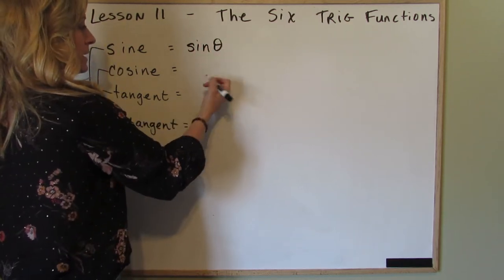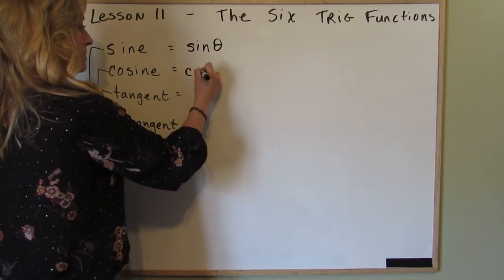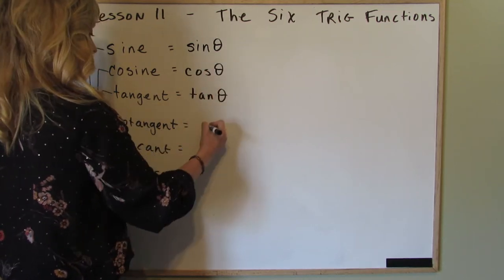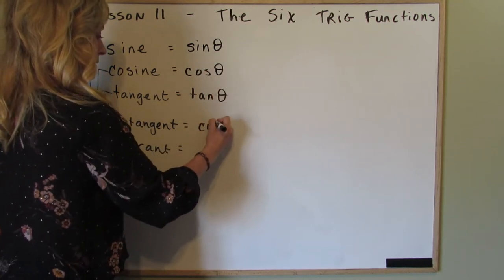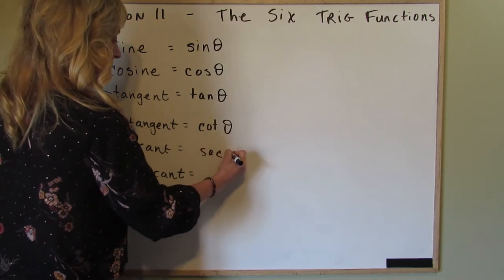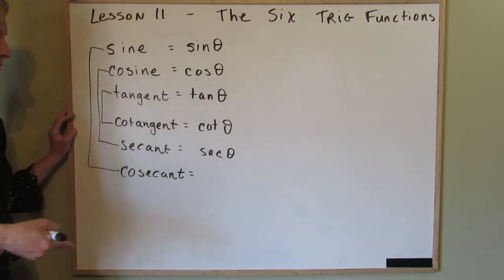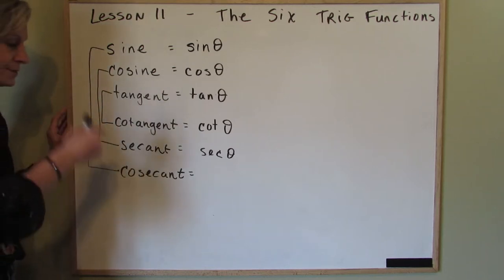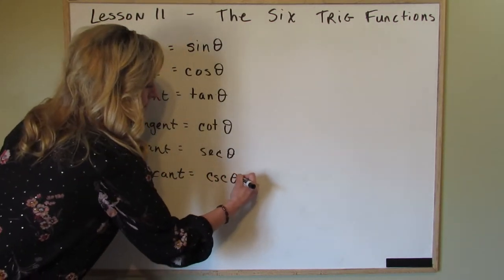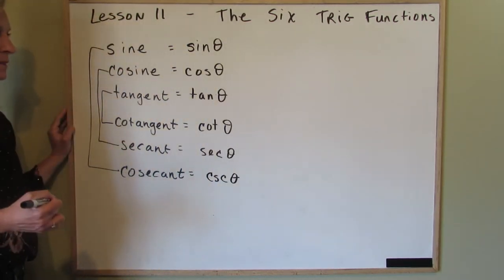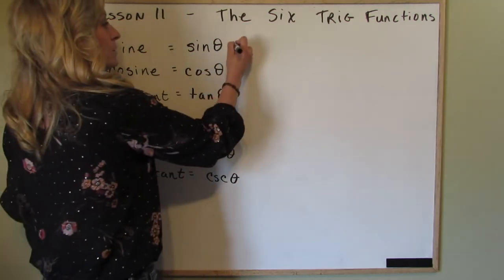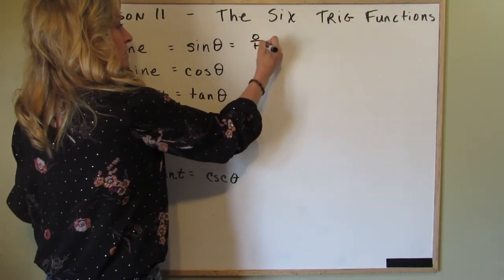That's sine — we'll call our angle theta — cosine, tangent, cotangent, secant. It's always the first three letters until you get to cosecant, and that is csc, still calling the angle theta.